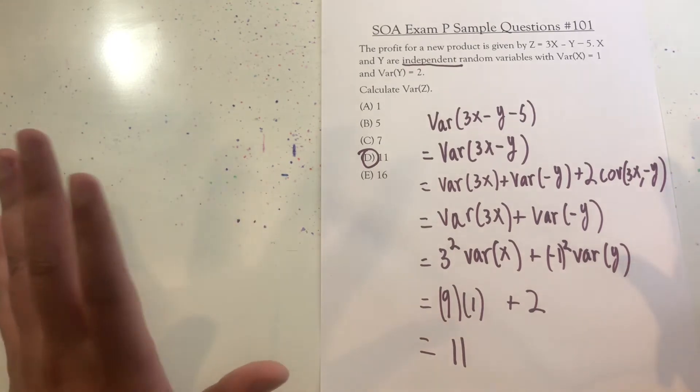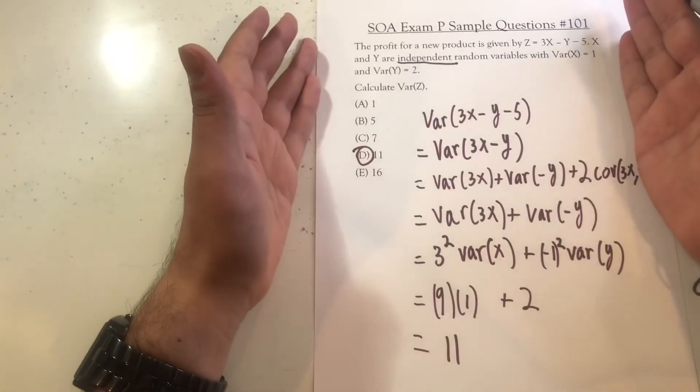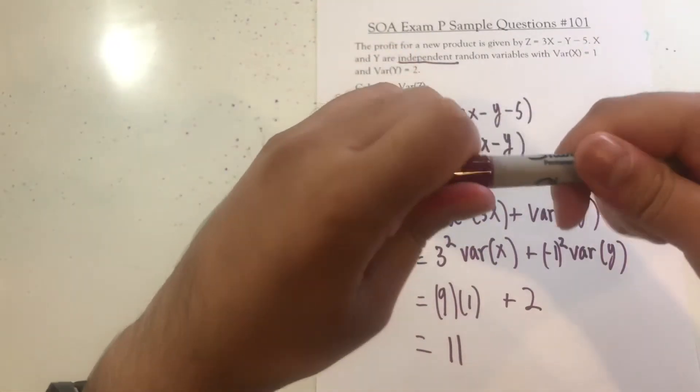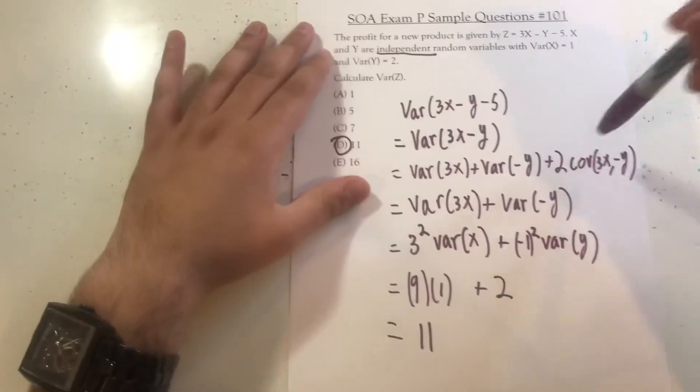Overall, one of the most straightforward problems you can get, it's strictly requiring you to memorize a couple of facts about how to deal with variance and covariance.